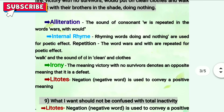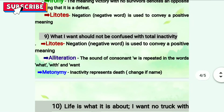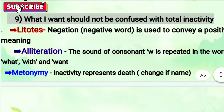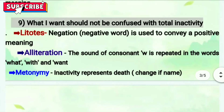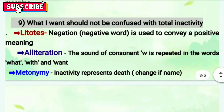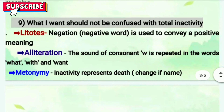Ninth line: 'What I want should not be confused with total inactivity.' The first figure of speech is litotes — 'not' is used to support a positive meaning. Next is alliteration — the sound of the consonant W is repeated. Another figure of speech is metonymy — 'total inactivity' here refers to death. The poet is saying: don't confuse my thoughts with death.